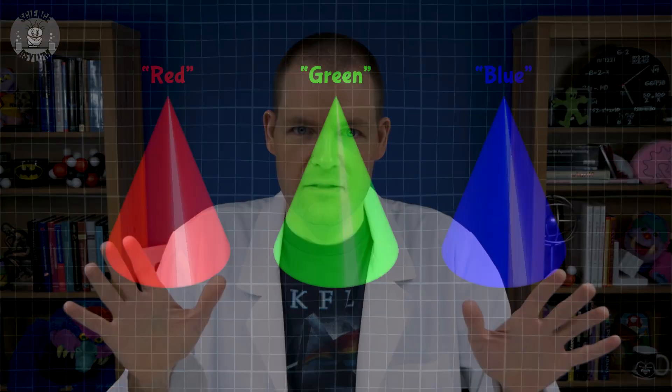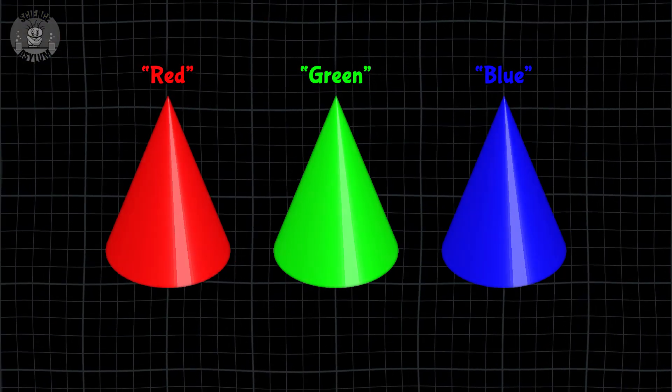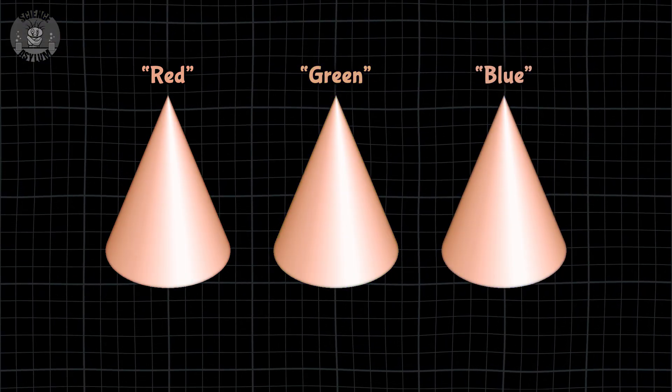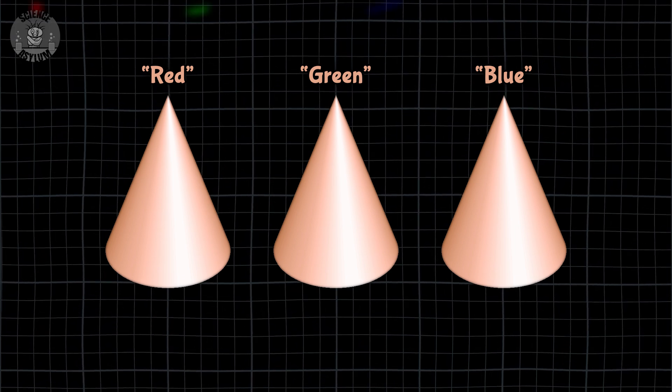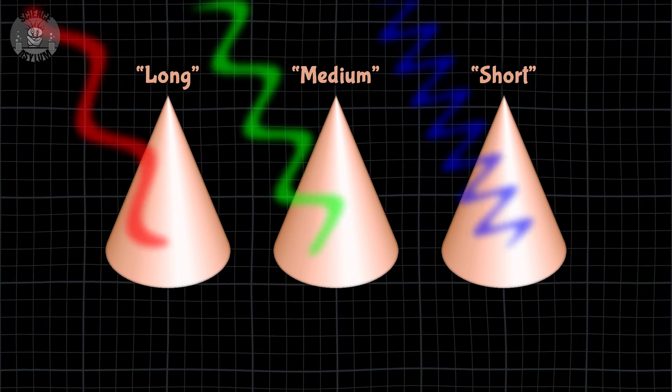They're not actually that color. Most things in the human body are roughly the same pinkish-brown color. These types of cones are called red, green, and blue cones because that's the type of light they each respond to.